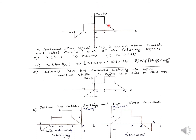Now we will do questions based on these three topics. We are considering signal X(T) which has an amplitude of 2 from 0 to 1, a decreasing slope from 1 to 2, a constant amplitude of 1 from minus 1 to 0, and a triangular waveform between minus 2 and minus 1. We have to solve: X(T-1), X(2-T), X(2T+1), X(4-T/2), X(T)+X(-T) multiplied by U(T), and X(T) multiplied by [δ(T+3/2) - δ(T-3/2)].